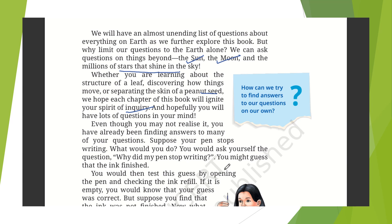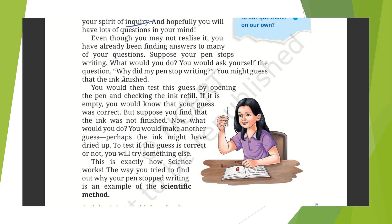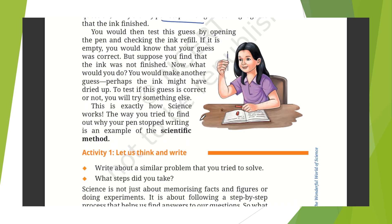Even though you may not realize it, you have already been finding answers to many of your questions. Suppose your pen stops writing — what would you do? You would ask yourself: why did my pen stop writing? Maybe the ink finished. So you would test this by opening the pen and checking the ink refill. In this way, you are checking the reason — and this is exactly how science works. The way you try to find out why your pen stopped writing is an example of what is called the scientific method.